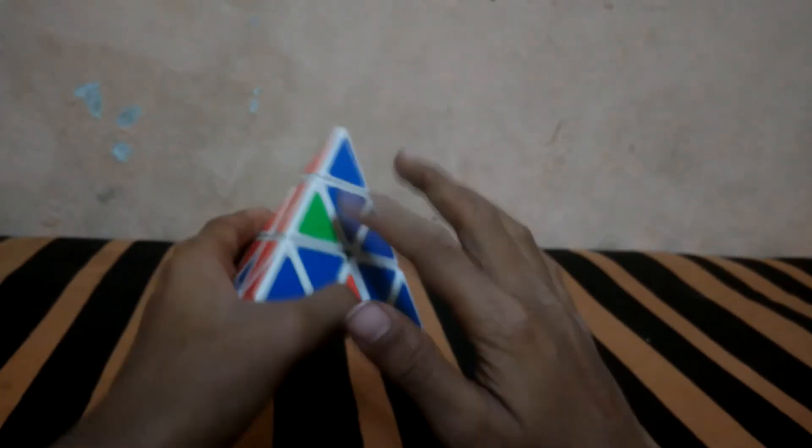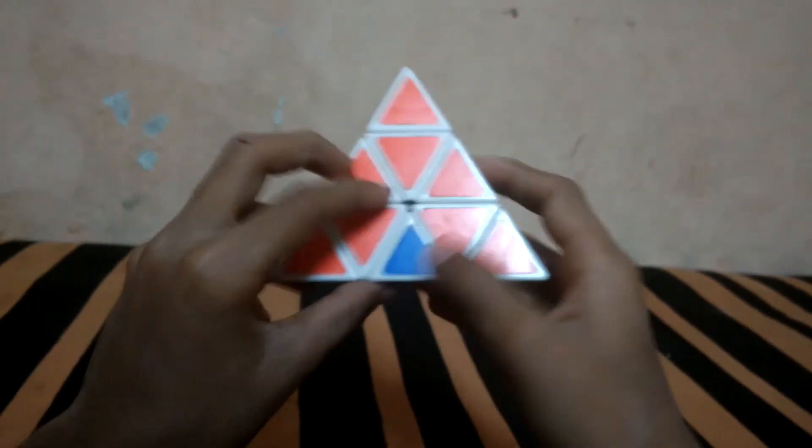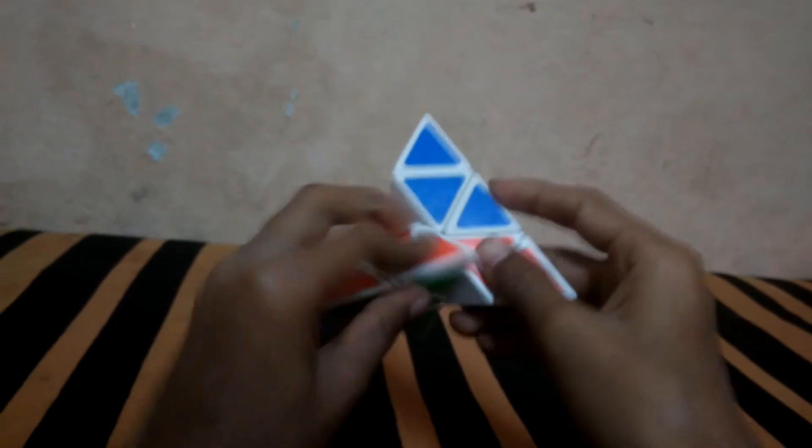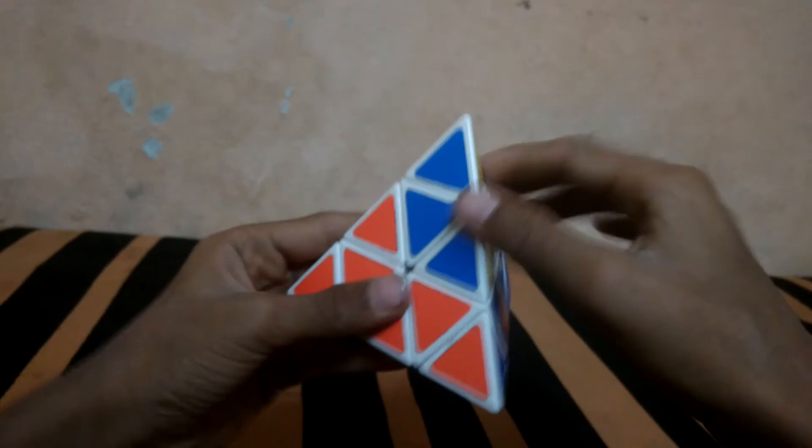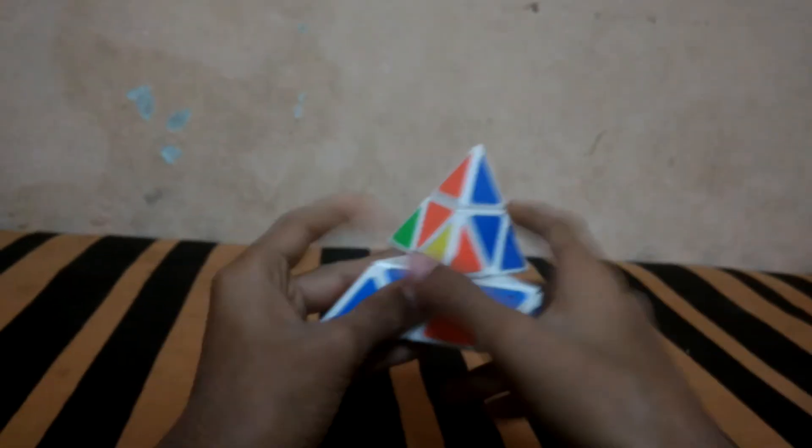Here green is completing, so we shall take green and orange. Same formula right to bottom: L U L'. Take this to its original place. Now the last is green and blue.